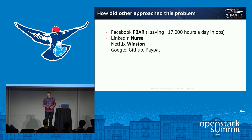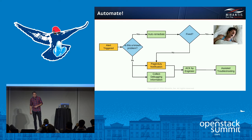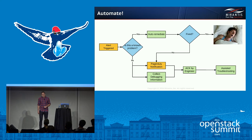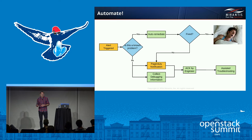Here's how we updated our workflow. If the problem is well-known, we just auto-remediate — things like cleaning up logs, service restarts. We don't need to wait for an engineer to fix it, especially during the night. If the problem is unknown or auto-remediation did not fix the problem, we fall back to our default workflow. But automation will now collect as much debugging information as possible and supply the on-call engineer with it, so they can resolve outages faster. We call it assisted or facilitated troubleshooting.